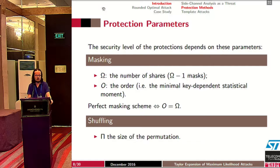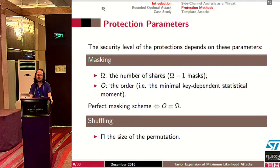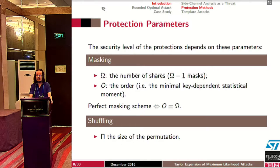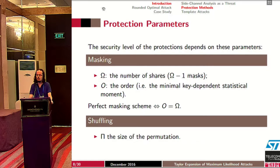These two countermeasures depend on important parameters. For masking, the key parameter is ω, the number of shares, which requires ω−1 masks. The other important parameter is the order of the implementation, which is the minimal key-dependent statistical moment — at best O equals ω. If a masking scheme meets this property, it is called a perfect masking scheme; in this talk we assume all masking schemes are perfect. For shuffling, the most important parameter is the size of the permutation, denoted Π.